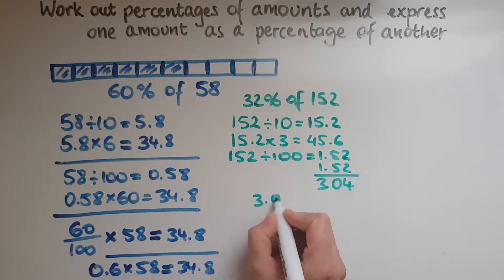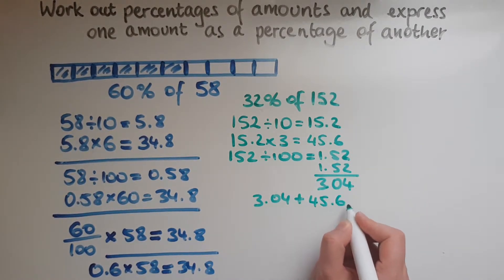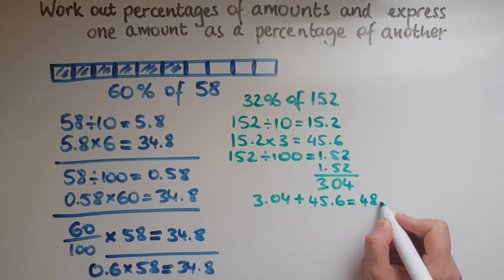So 3.04, added to 45.6. So added these together, then we get 48.64.